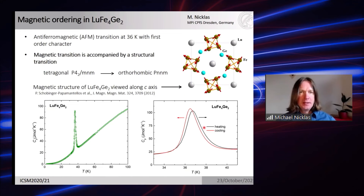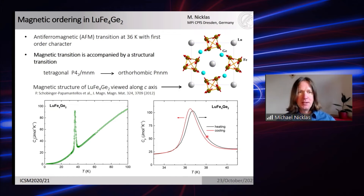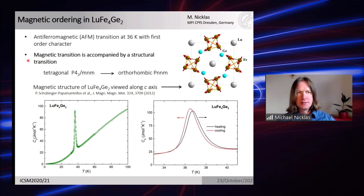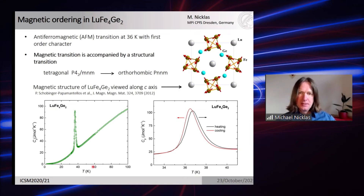LuFe4Ge2 shows antiferromagnetic order below 36 Kelvin. In the specific heat, the transition is clearly first order: a sharp peak with hysteresis between warming and cooling. From previous neutron diffraction studies, the magnetic structure is known. This transition is accompanied by a structural transition from tetragonal to orthorhombic, and at ambient pressure there is no indication that the magnetic and structural transitions are separated — quite similar to what is observed in the iron-pnictide superconductors, which motivated us to look closer at this material.